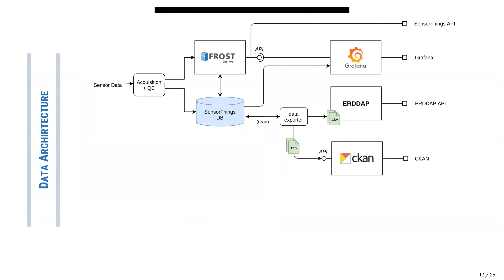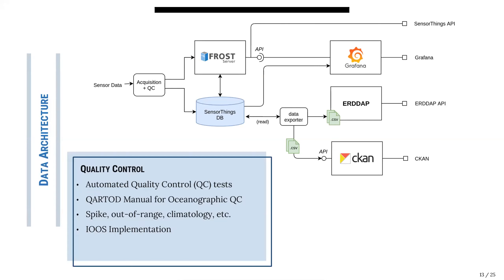This is our infrastructure and I'm going to briefly explain the different services we have deployed. The first thing is quality control when data arrives at our system. We can detect spikes and erroneous data and flag it to mark it as suspicious or bad data.